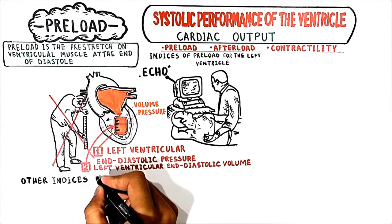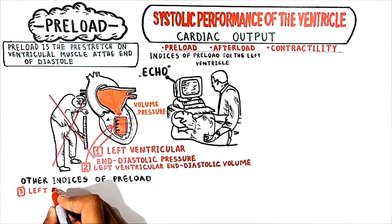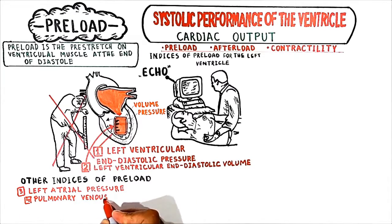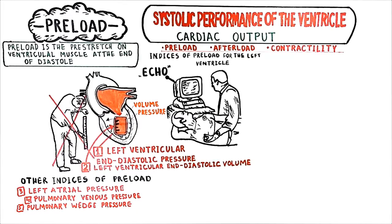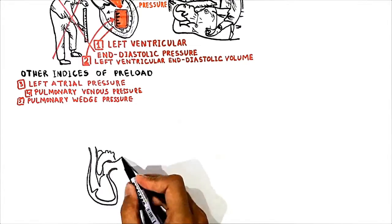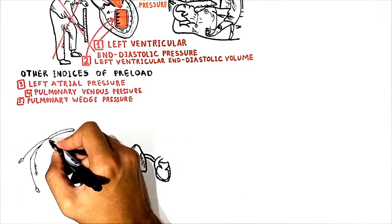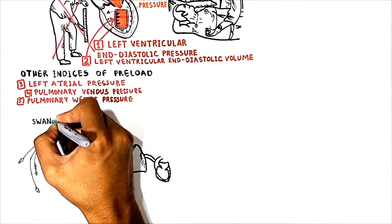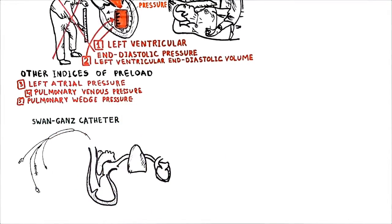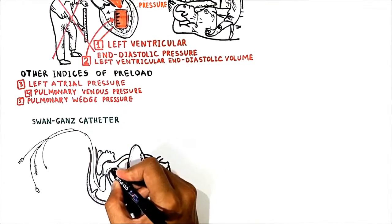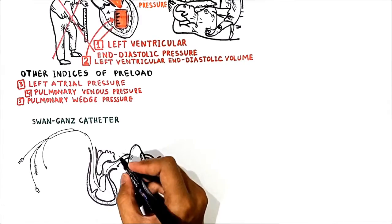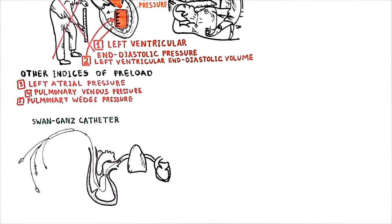Other indices of preload are left atrial pressure, pulmonary venous pressure, and pulmonary wedge pressure. Pulmonary wedge pressure is measured by inserting a Swan-Ganz catheter into a peripheral vein like the jugular or femoral vein, then advancing the catheter into the right atrium, right ventricle, pulmonary artery, and then into a branch of the pulmonary artery. Just behind the tip of the catheter is a small balloon that can be inflated with air, and right there we measure the pressure.